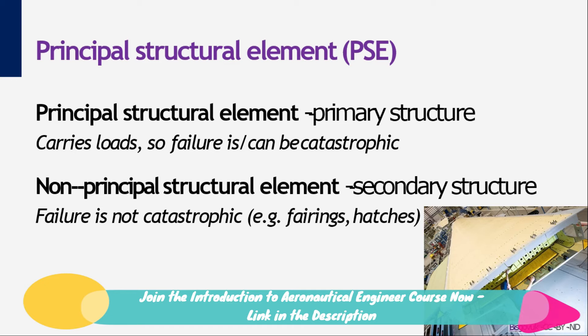Therefore we distinguish between primary and secondary structures. The primary structure carries the main load; damage or failure of an element of this part of the structure could cause a catastrophe. The elements of the primary structure are called PSEs, which means Principal Structural Elements. They need to be inspected regularly during the operation of an aircraft. The secondary structure takes much smaller loads and is used for protection or access to compartments.